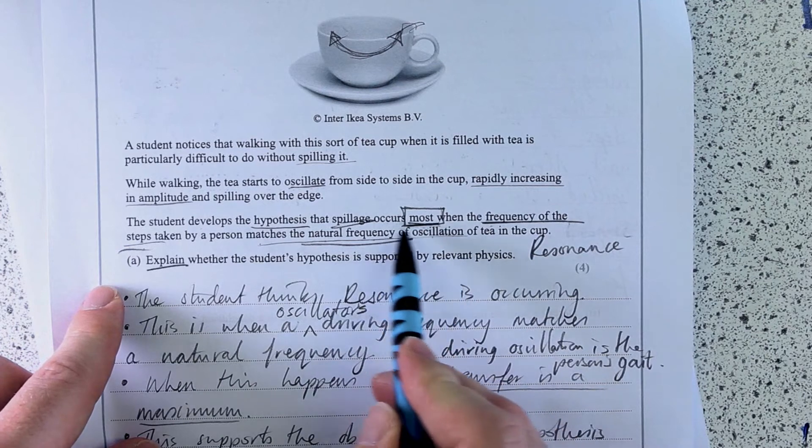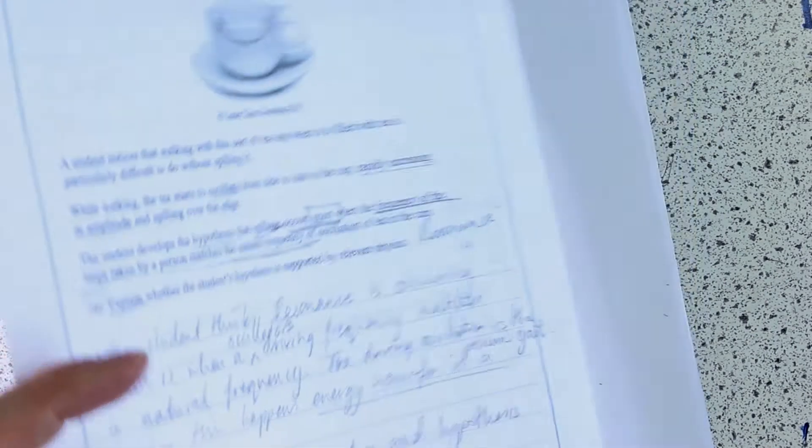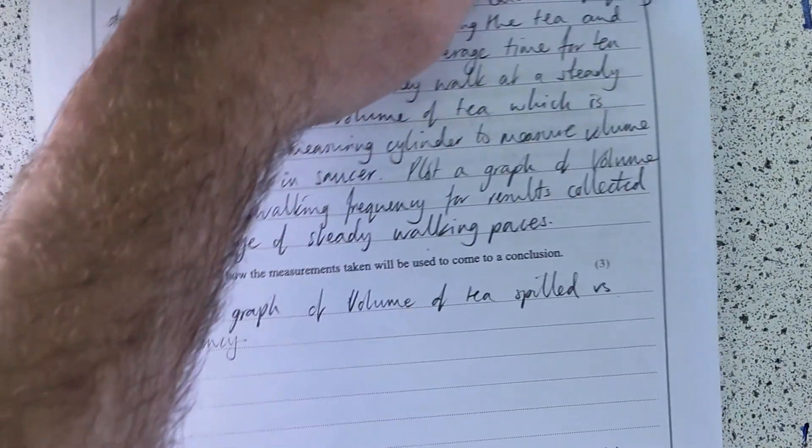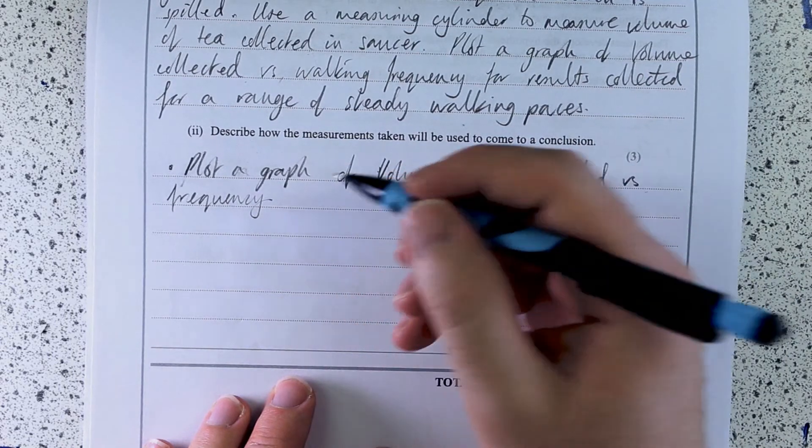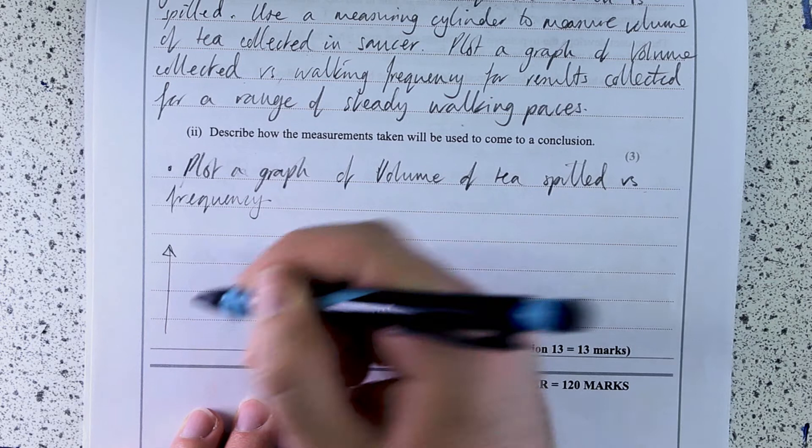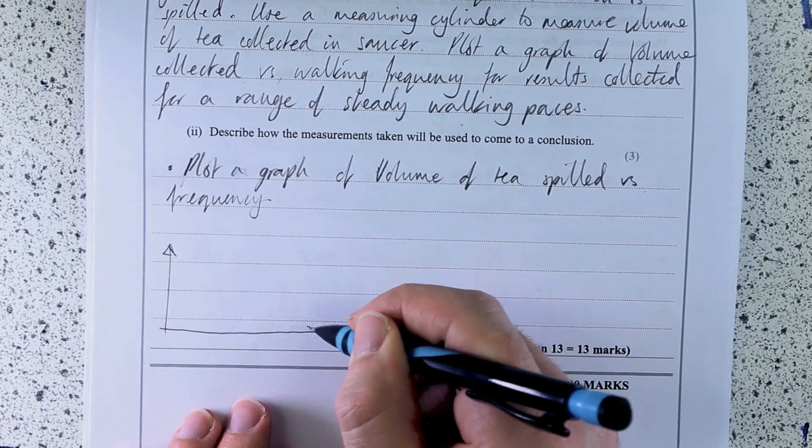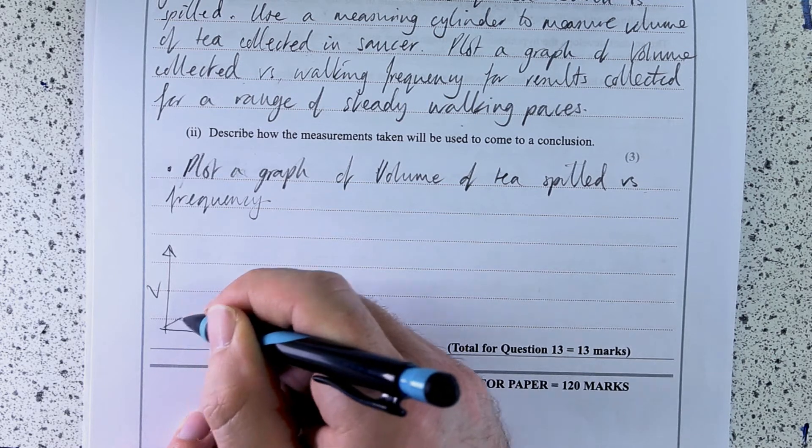What you need to do then is you need to see if there's a relationship between them. So what is hypothesis again? He says, most spillage occurs when the frequency matches the natural frequency. So I'm actually going to sketch my graph here. Why not? This is the graph I would expect to see.